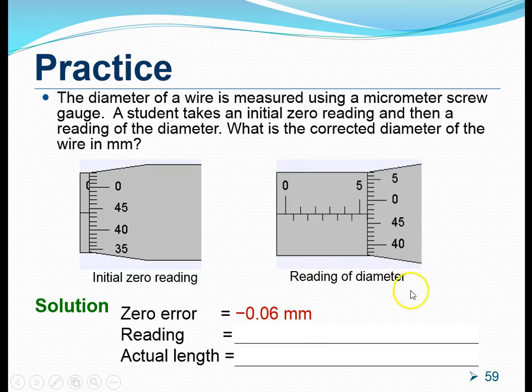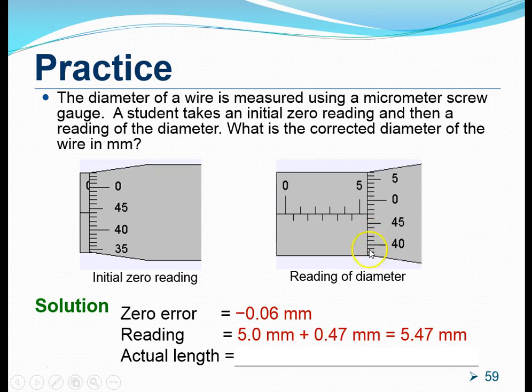The diagram on the right shows the reading on the micrometer, which should be read as 5.47 millimeters. This reading does not give us the actual length of the object being measured. The actual length, we have to take into account the zero errors. Since it's a negative zero error, we have to add this value into 5.47, giving us 5.53 millimeters.